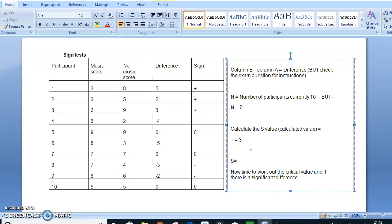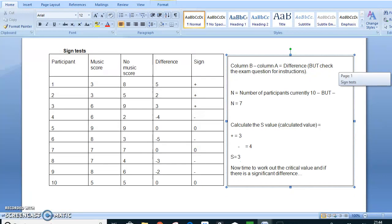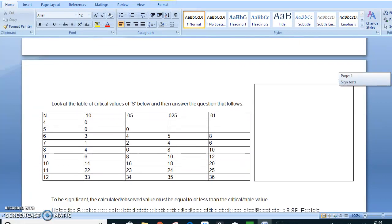So as you can see, there is 3 positives and 4 negatives. So the lesser of those two is 3. So S equals 3. You don't add them up. You don't do anything else. You just work out which one of those two is less. Is it less positive signs in total or less negative? So S was equal to 3. And now we have to work out if this is significant. And to do that, we have to go to the critical value table.